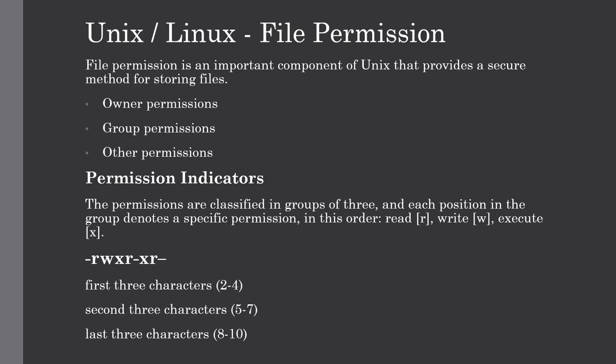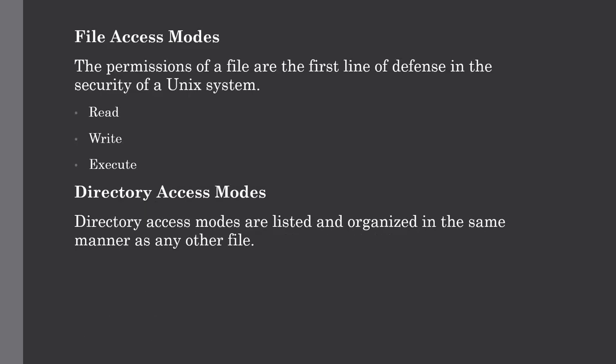Regarding file access modes: the permissions of files are the first line of defense in security of a Unix system. The basic building blocks of Unix permissions are read, write, and execute. Read grants the capability to read — that is, only to view the contents within the file. Write gives the capability to modify or remove content within the file. And execute permission allows you to run a file as a program.